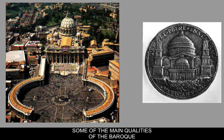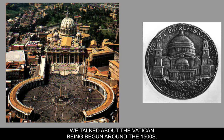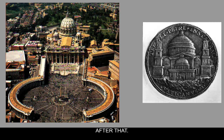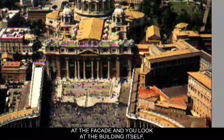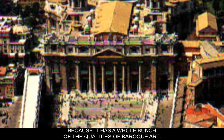Some of the main qualities of the Baroque are really evidenced by looking at the Vatican, because we talked about the Vatican being begun around the 1500s and it gets worked on for nearly 200 years after that. When we study the Vatican — the facade and the building itself — it's a really good example of the Baroque style because it has a whole bunch of the qualities of Baroque art.